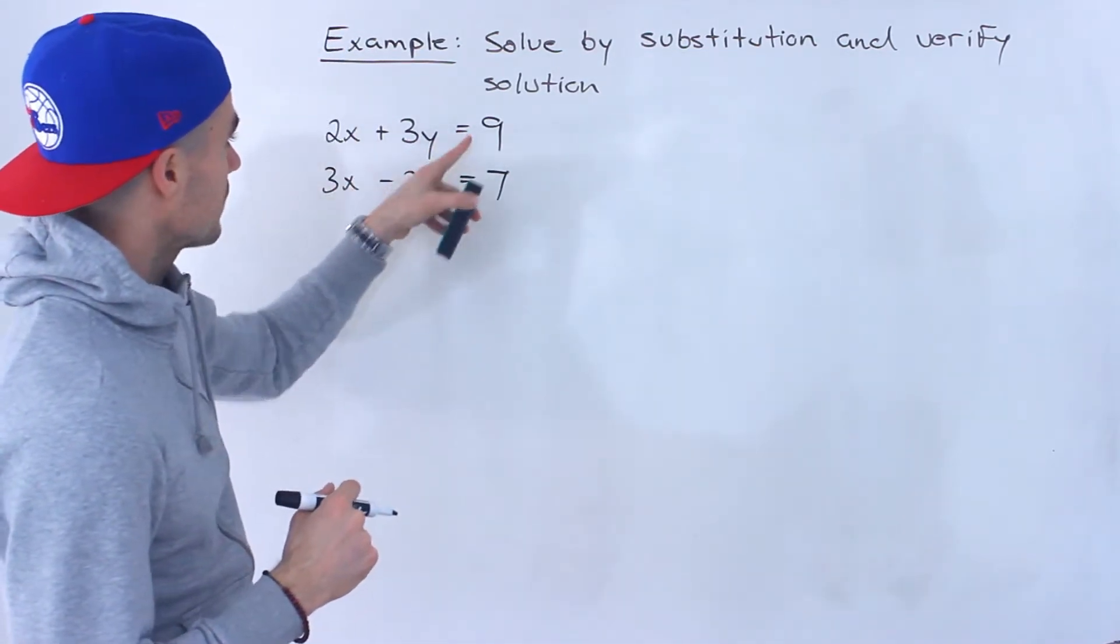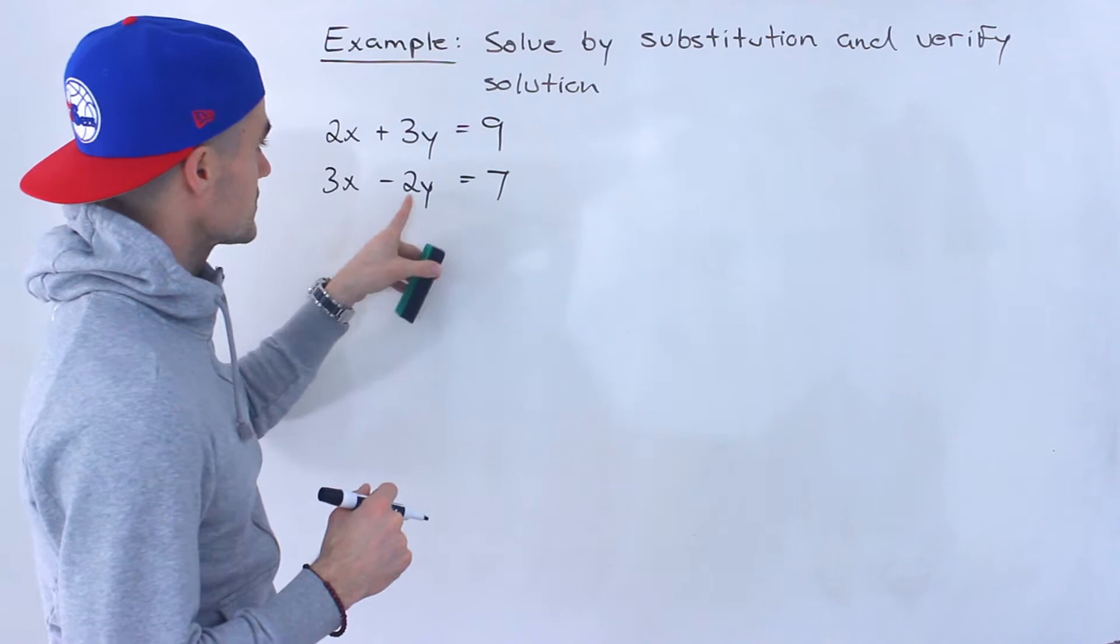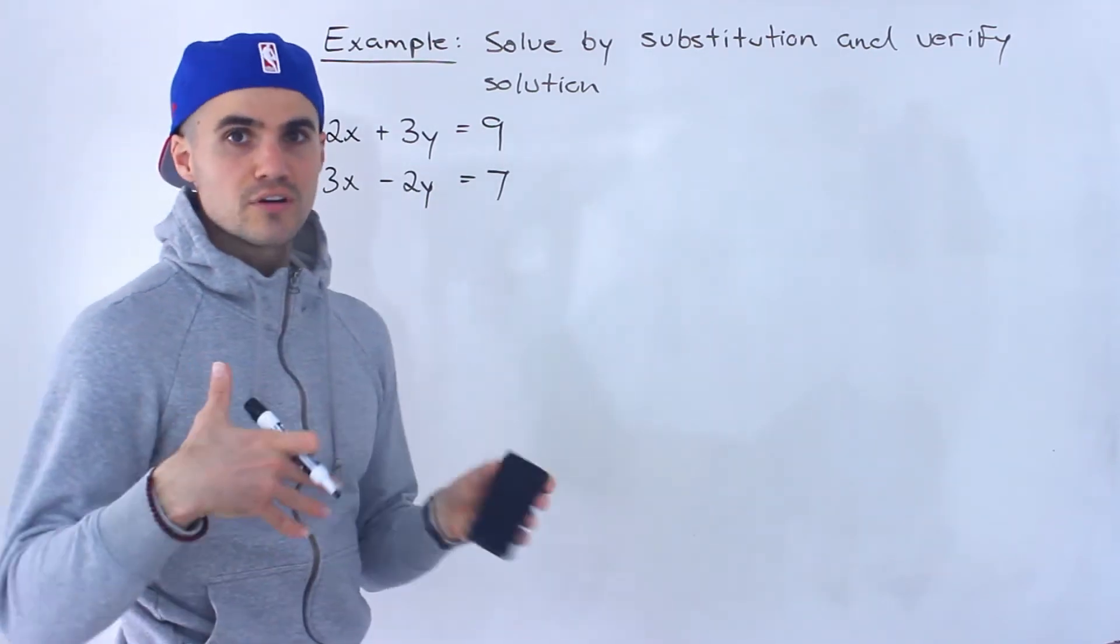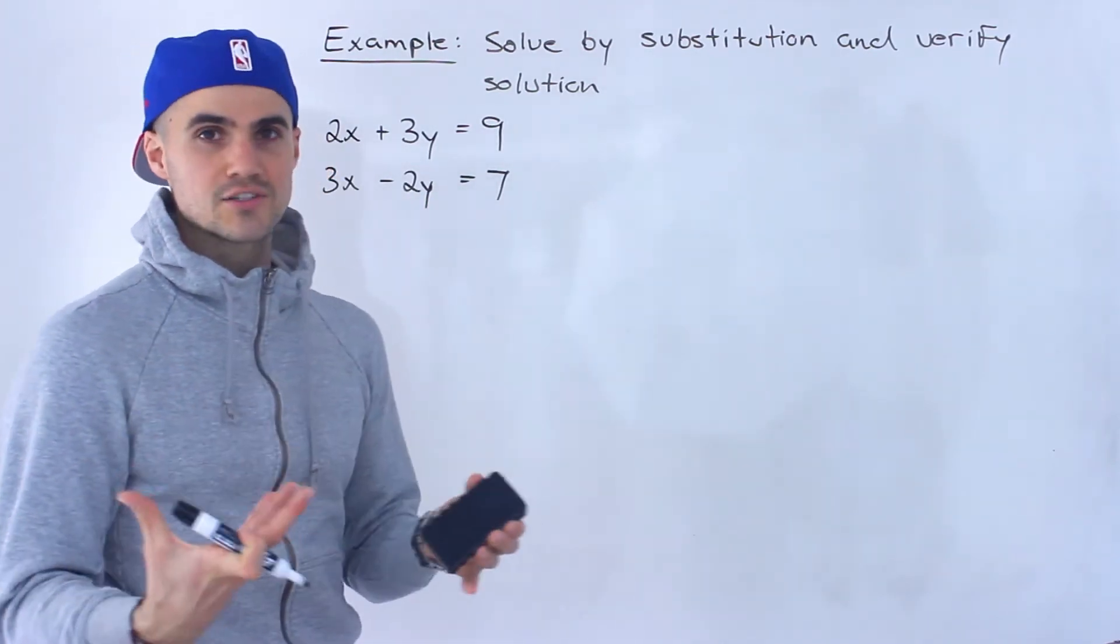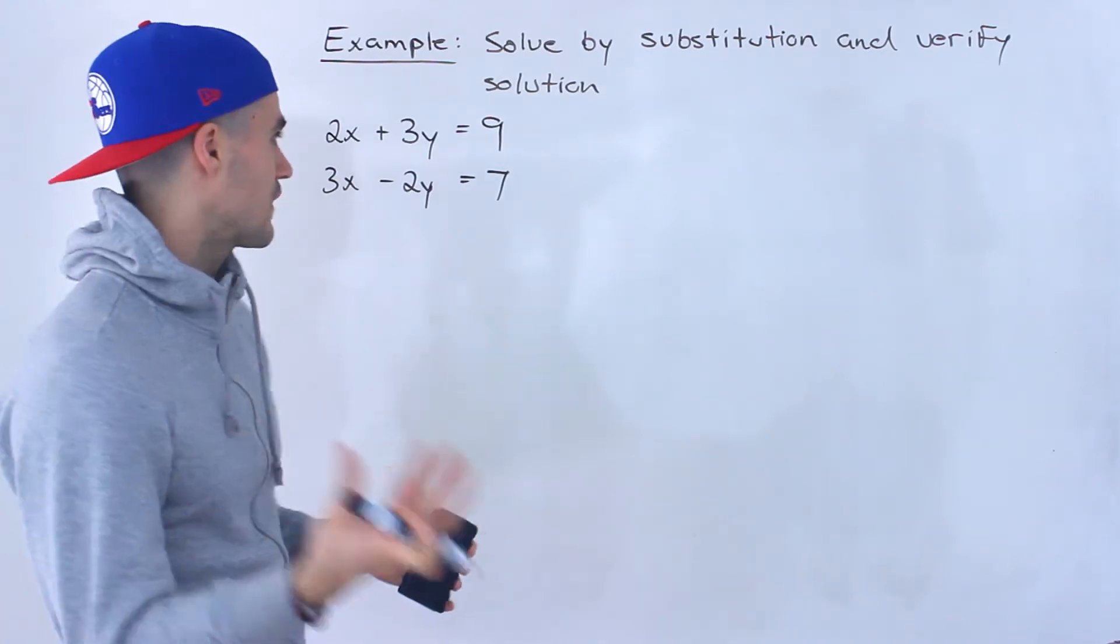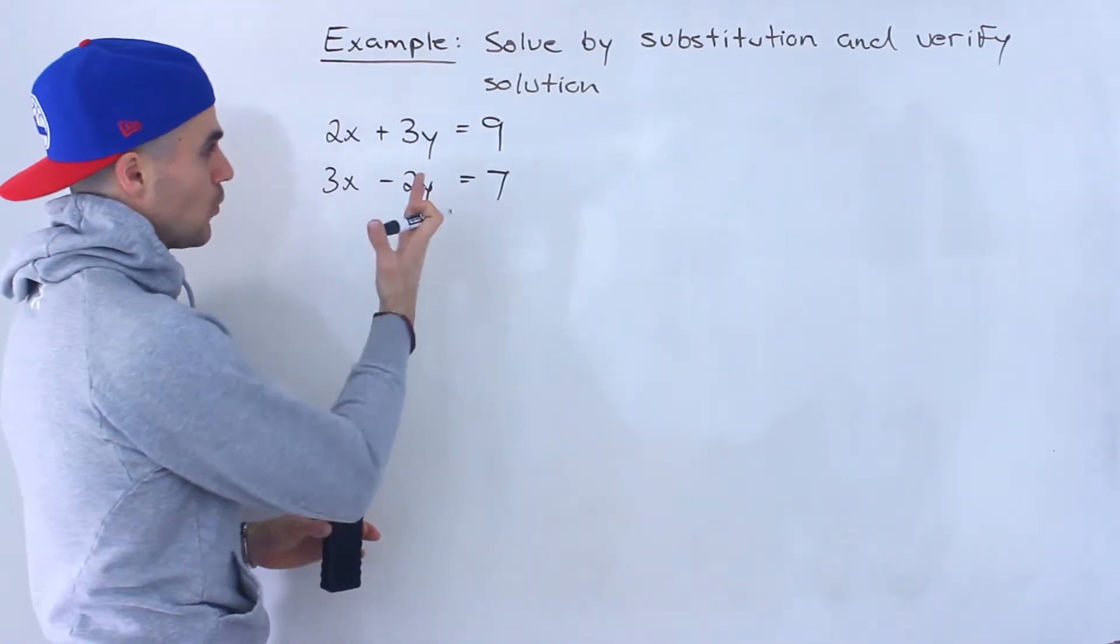So we've got 2x plus 3y equals 9. We've got 3x minus 2y equals 7. Now as I've shown in previous examples with substitution, first thing I'd like to look at is, is there any variable that's by itself that has a 1 in front?